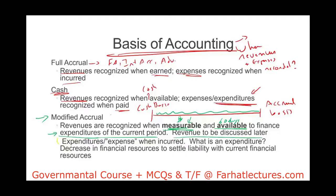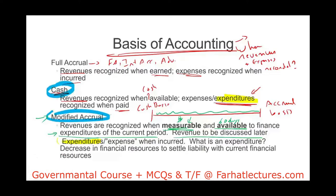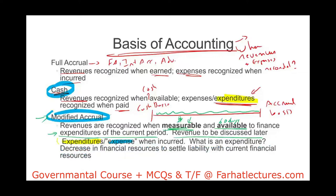Notice we use the term expenditure under cash basis and modified accrual, but not under full accrual. Expenditure is not the same as expense. It is a decrease in a financial resource — usually cash — used to settle a liability with current financial resources. You have an obligation and you pay it with cash, either to pay for something or to settle a liability.